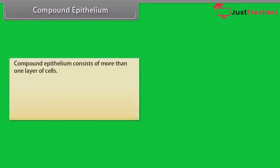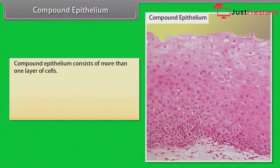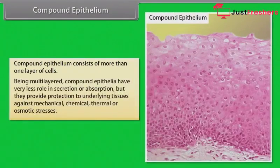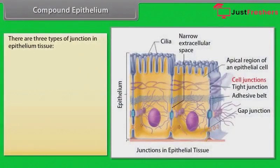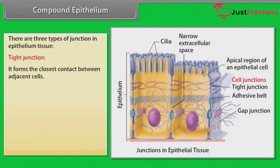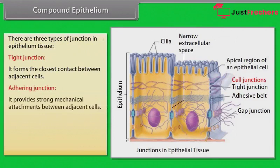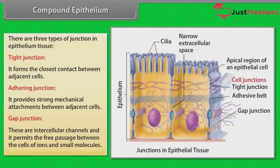Compound epithelium consists of more than one layer of cells. Being multilayered, compound epithelia have very less role in secretion or absorption, but they provide protection to underlying tissues against mechanical, chemical, thermal or osmotic stresses. There are three types of junctions in epithelium tissue: tight junction, which forms the closest contact between adjacent cells; adhering junction, which provides strong mechanical attachments between adjacent cells; and gap junction, which are intercellular channels that permit the free passage of ions and small molecules between cells.